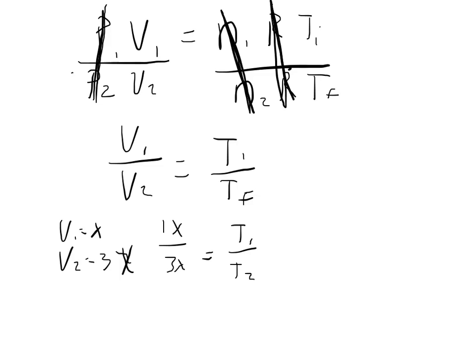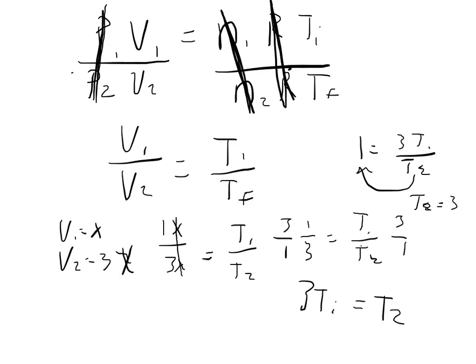Now, because 1 is the coefficient there, and X is redundant on the top and bottom, we can cancel out the X, and we can say that 1/3 is equal to the initial temperature over the final temperature. With a little bit of algebra, we end up seeing that 3 times the initial temperature equals the final temperature. The way I arrived at that is that I multiplied both sides by the reciprocal of 1 over 3. So I times both sides by 3 over 1, I end up getting 1 equals 3T1 over T2. Then I can multiply T2 to the other side, so T2 is equal to 3 times T1.